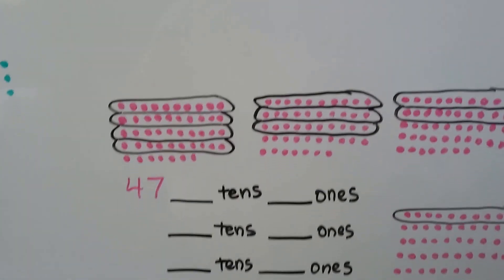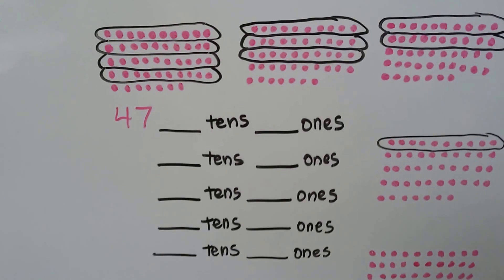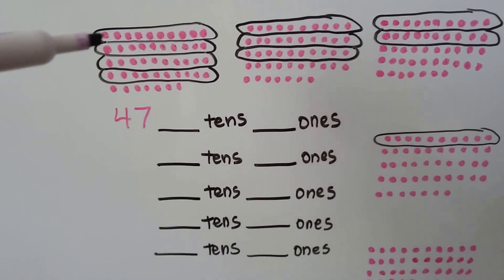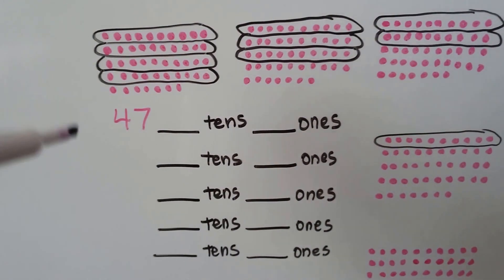Let's try this one. This is a big one. We have 47. We have 4 tens and 7 ones. 1, 2, 3, 4 tens.